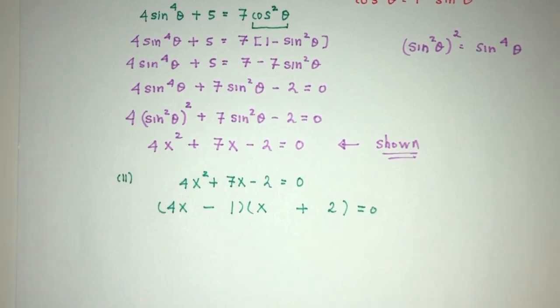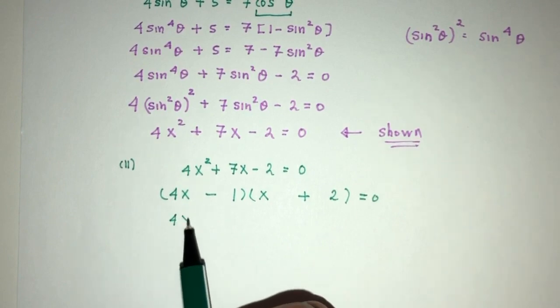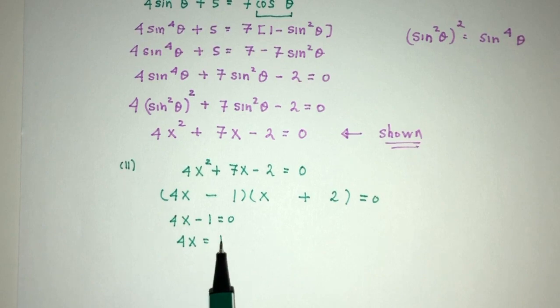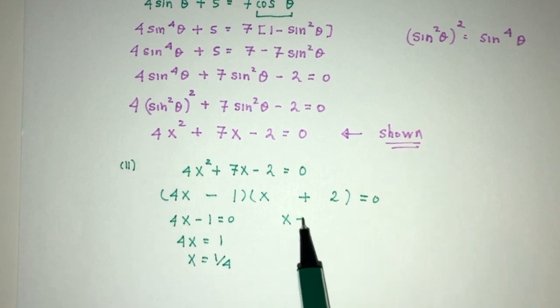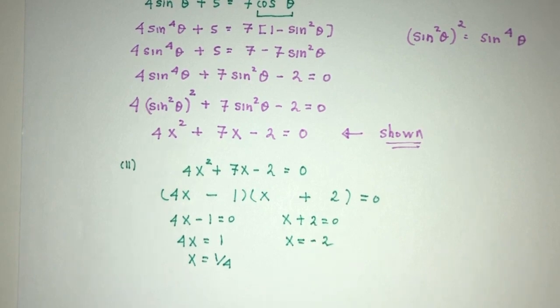Again, if you don't know how to factorize, you can always use your formula to solve this. Now, this will be 4x - 1 = 0, so 4x will be 1, and x will be 1/4. x + 2 = 0, x will be minus 2. Okay, great.